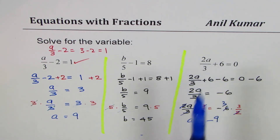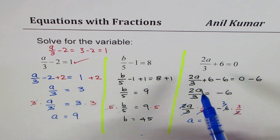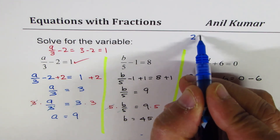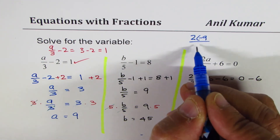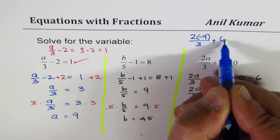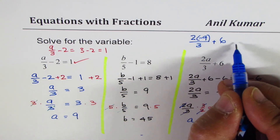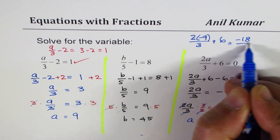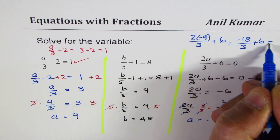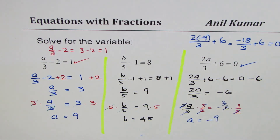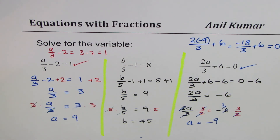If I substitute minus 9 here, we should check. We get 2 times minus 9 over 3 plus 6. 2 times minus 9 is minus 18, so minus 18 over 3 plus 6, and that is indeed 0, as expected. It's always a good idea to check your result. I hope that really helps. Thank you and all the best.